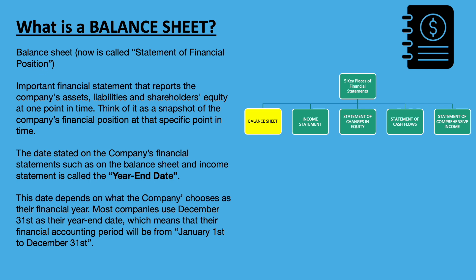So what is a balance sheet? A balance sheet is now called statement of financial position, but we're used to calling it balance sheet, so we'll stick with it. A balance sheet is an important financial statement that reports the company's assets, liabilities, and shareholders' equity at one point in time. Think of it as a snapshot of the company's financial position at that specific point in time. It is also one of the five key pieces of the financial statements.